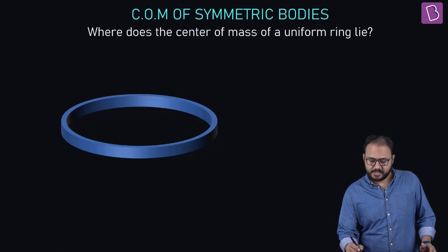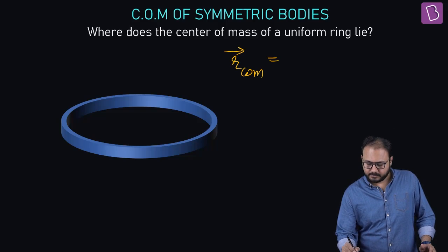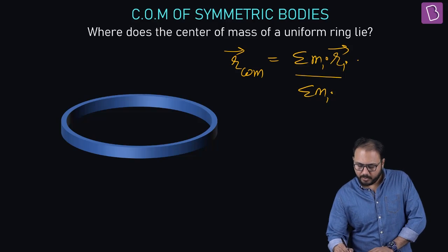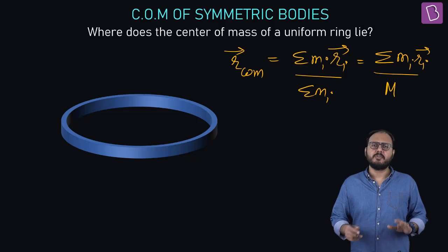What is the formula for discrete? Very simple. R_COM is sigma m_i r_i upon sigma m_i. Or I can say sigma m_i r_i upon M, because summation of all masses will be M.